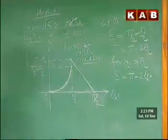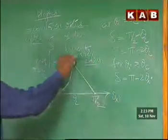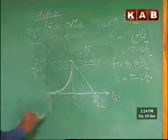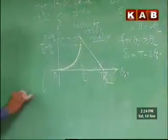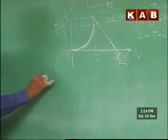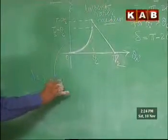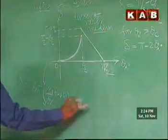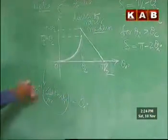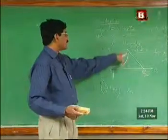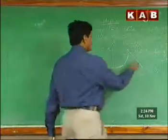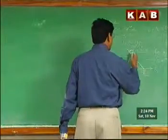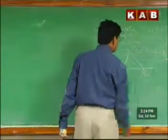This is the variation. From here to here it is a linear variation, and from here it is a nonlinear variation. For the nonlinear part, the expression is delta = sin⁻¹(μ_d / μ_r × sin θ_i) − θ_i. This is the functional relation for that graph. For the linear graph, variation of delta is π − 2θ_i. This is the equation representing the graph delta variation.